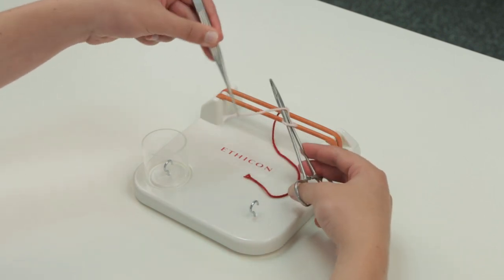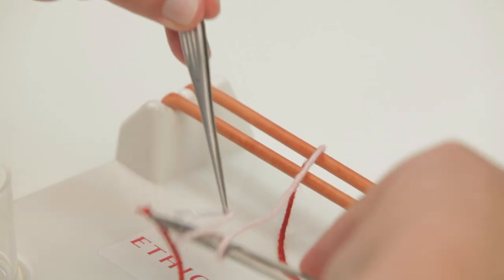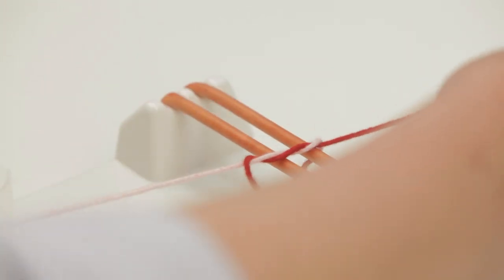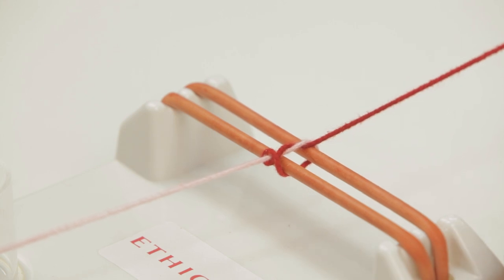Then take the other end of the suture, pull it through the loops and away from you so that a square knot lies flatly on the material being tied.